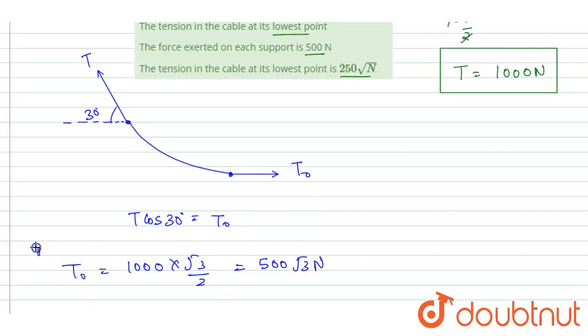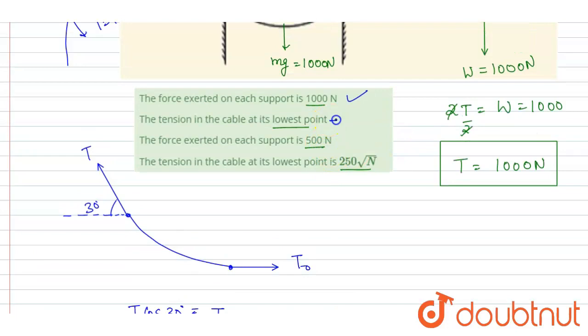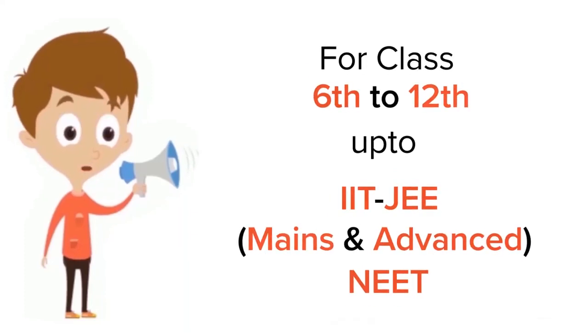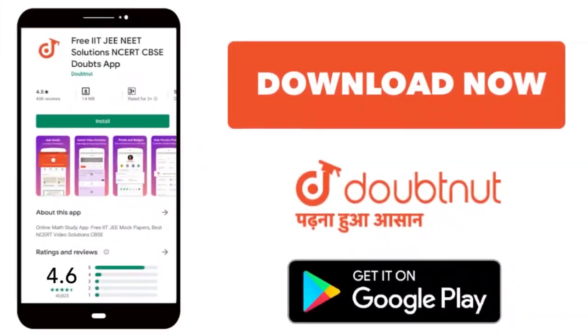So the tension at the lowest point will be 500√3. If you see this option, this is 500√3, and this is also correct. So correct options are A and B. Thank you. For class 6 to 12, IIT JEE and NEET level, trusted by more than 5 crore students, download Doubtnut app today.